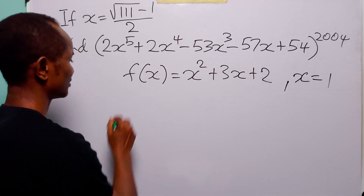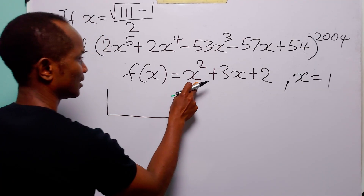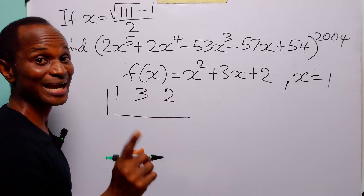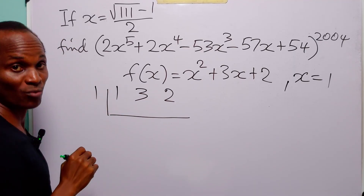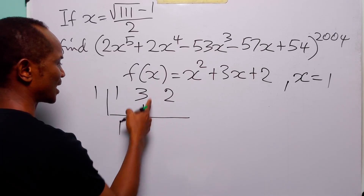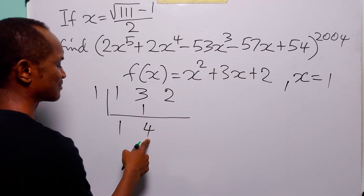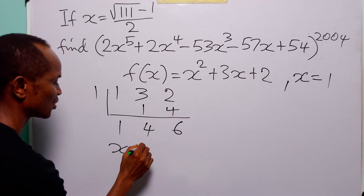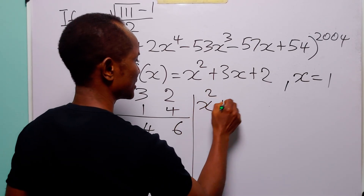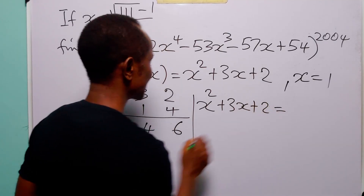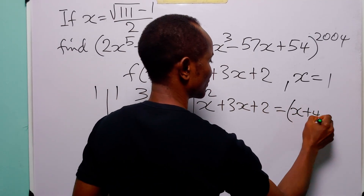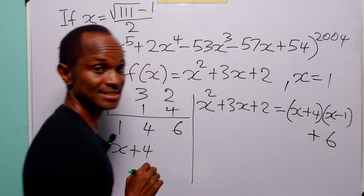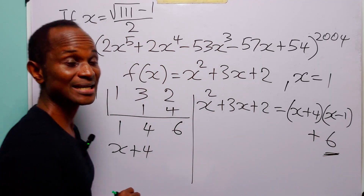Using the synthetic division method, we have the coefficient of x² is 1, the coefficient of x is 3, and the constant term is 2. We are dividing by (x − 1), so here we have 1. We bring down 1; 1 times 1 is 1; 3 + 1 = 4; 1 times 4 = 4; 2 + 4 = 6. So we get quotient (x + 4) and remainder 6.